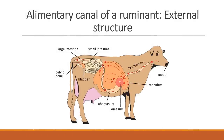Before we discuss digestion, I want us to look into the alimentary canal. An alimentary canal is the passage along which food passes through the body. It starts from the mouth and ends in the anus. The canal contains a series of organs involved in digestion. It also absorbs water and excretes the part of food that cannot be digested through the anus.